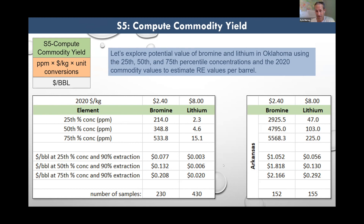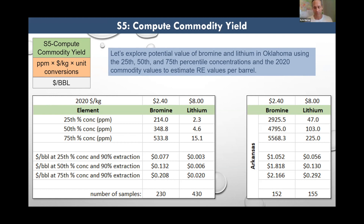But if you look at the numbers for our neighboring state of Arkansas, it's easy to imagine how much of a difference is made by high concentrations. In southwestern Arkansas where concentrations are very high, you could potentially extract $1.05 per barrel of bromine on the low end, or more than $2.16 per barrel on the high end. Lithium is not quite as exciting but compared to what we're working with in Oklahoma it's substantially higher. What we might do at this stage is continue to collect samples, understand the distribution of concentrations, identify what formation they're coming from, and identify potential hot spots for production.